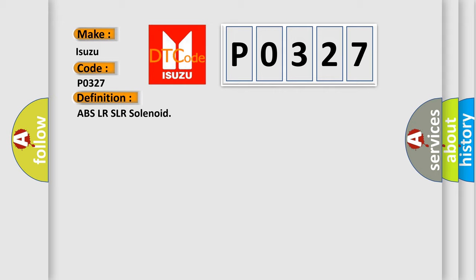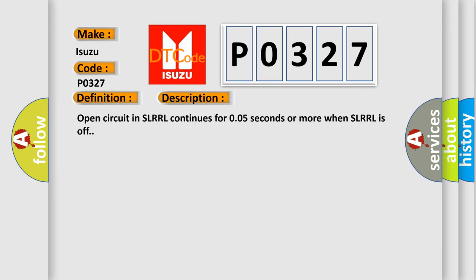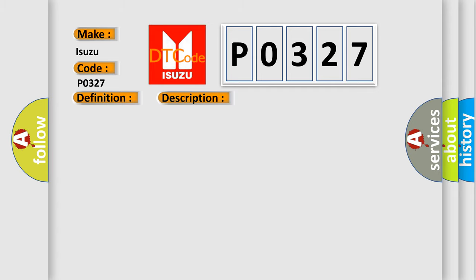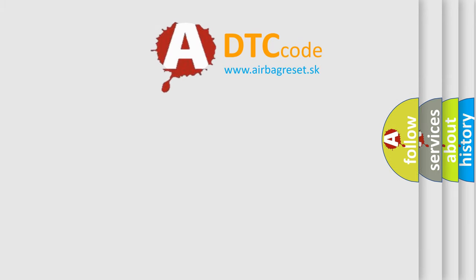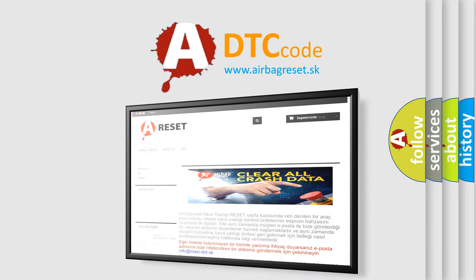Here is a short description of this DTC code. Open circuit in SLR-RL continues for 0.05 seconds or more when SLR-RL is off. This diagnostic error occurs most often in these cases: Brake actuator assembly, SLR-RL circuit, brake AQ. The Airbag Reset website aims to provide information in 52 languages. Thank you for your attention.